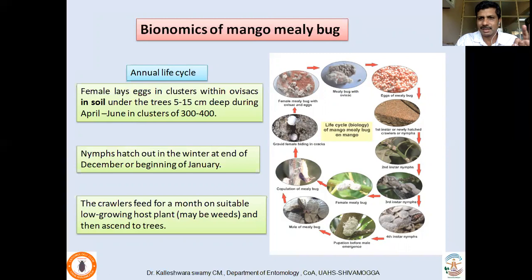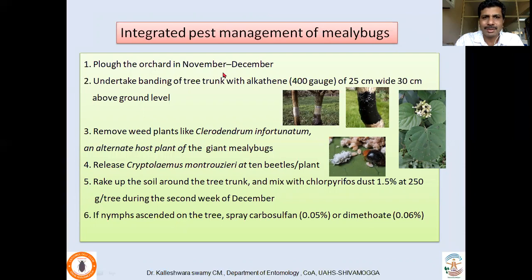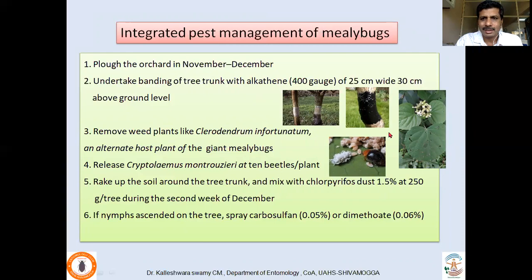For integrated pest management: plough the orchard during November–December to expose the eggs, which causes partial reduction in population. Undertake banding of tree trunks with alkathene, 25 cm wide and 30 cm above ground level — this prevents the crawlers from ascending to the trees. Remove weed plants like chirodendron to eliminate the early feeding habitat of hatchlings, reducing population build-up.